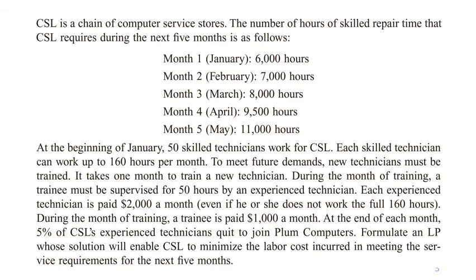In this example, CSL is a chain of stores that services computers. Each month it requires a number of hours of skilled repair time from technicians, but the number of hours differs from month to month. For example, in January CSL needs 6,000 hours of skilled repair time. At the beginning, CSL has 50 skilled technicians and each skilled technician can work up to 160 hours — the phrase 'up to' means this is a constraint.